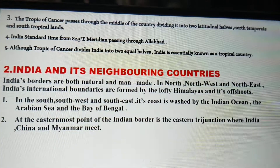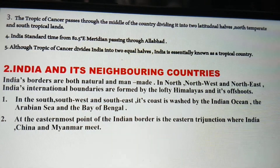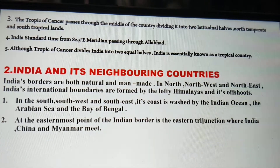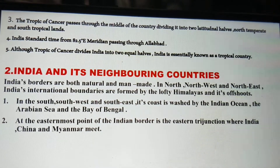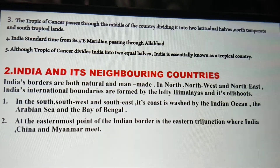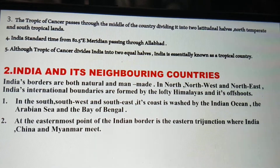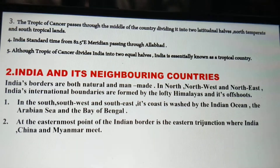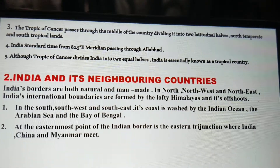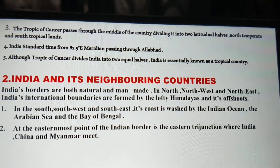India Standard Time is based on the 82.5° east meridian, which passes through Allahabad. You need to remember this. Although the Tropic of Cancer divides India into two equal halves, India is essentially known as tropical lands.